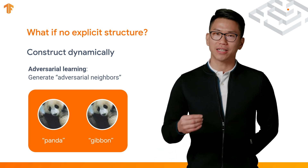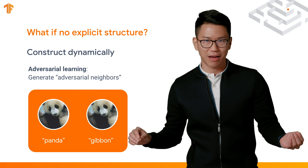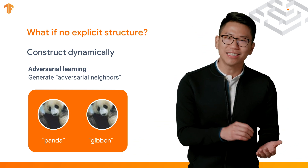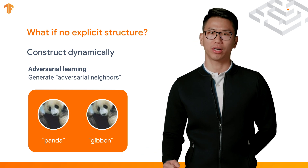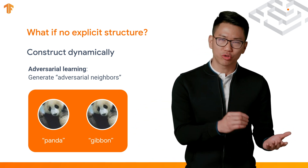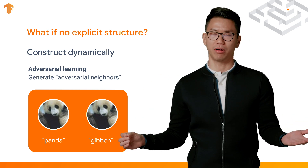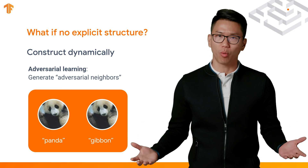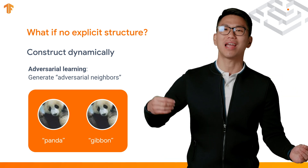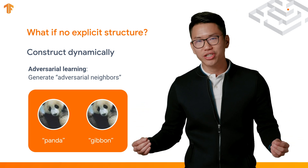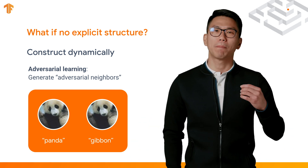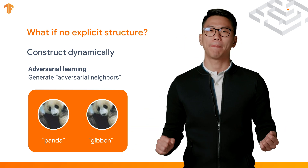After the adversarial neighbor is generated, we add an edge to connect the sample with its adversarial neighbor to dynamically construct the structure. This structure can then be used in the Neural Structure Learning framework. Why do we want a structure connecting the sample with its adversarial neighbor? In the Neural Structure Learning framework, the neural net learns to maintain a structure by keeping the similarity between the sample and its neighbor. Essentially, this is telling the neural net that the sample and its adversarial neighbor are actually pretty similar, so please keep their similarity and don't be confused by the small perturbation.